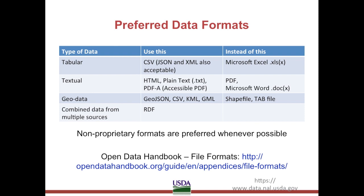For data that has a geographic or location element to it, GeoJSON, CSV, KML, or GML are all good options for publishing. Shape files and tab files should be avoided where possible due to the overly complex, proprietary, and aging nature of the formats.